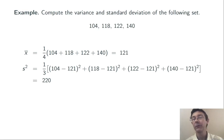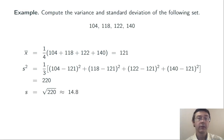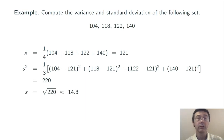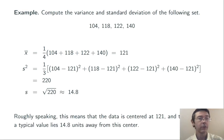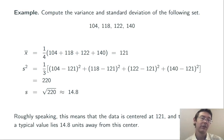220 does measure the spread or variability of this set, but it's difficult to immediately interpret. When I take the square root to get the standard deviation, however, I get 14.8 — and that's a number that actually makes sense as a measure of spread. Overall, I interpret these numbers to mean that the data is centered at 121 and that a typical value lies 14.8 units away from this center.